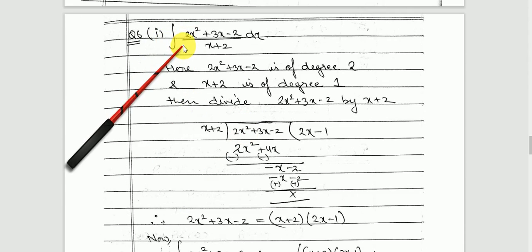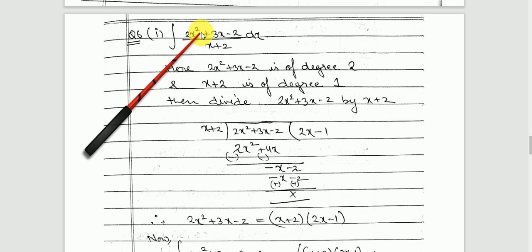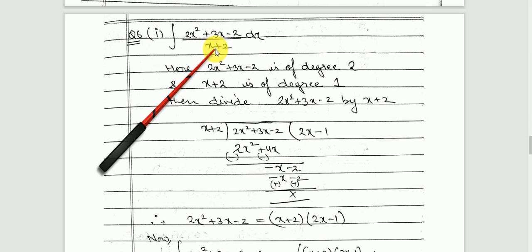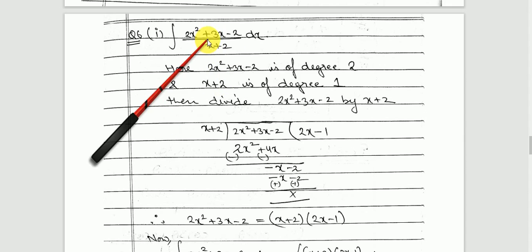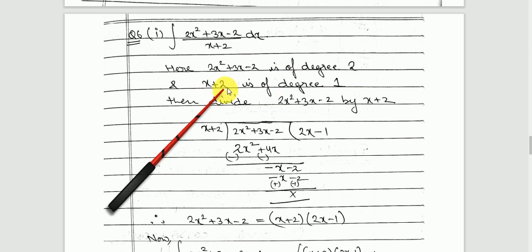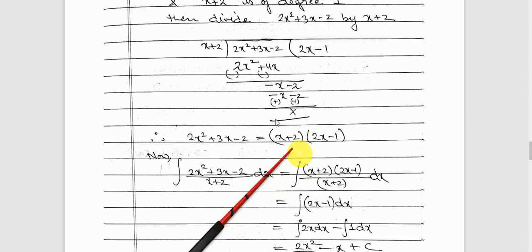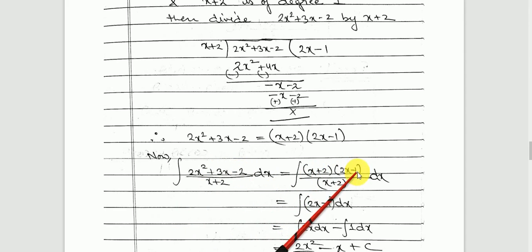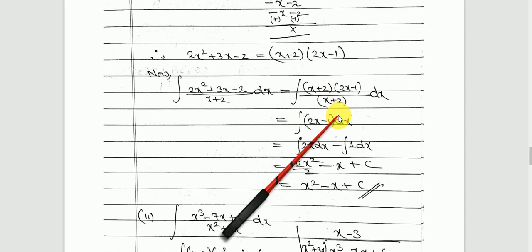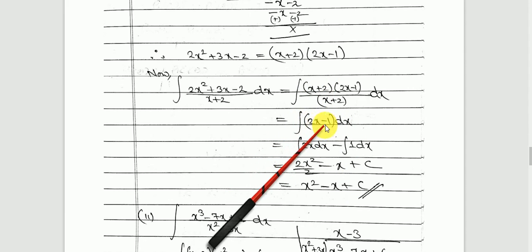Question 6.1: integrate (2x² + 3x − 2) upon (x + 2). The numerator has degree 2 and the denominator degree 1, so the numerator is of higher degree and we must divide. After dividing, we get 2x² + 3x − 2 = (x + 2)(2x − 1). So the integrand becomes (x + 2)(2x − 1) upon (x + 2), and the (x + 2) terms cancel, leaving 2x − 1. Now integrate each term to get your answer.